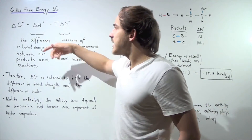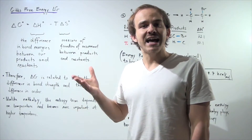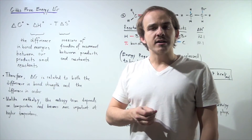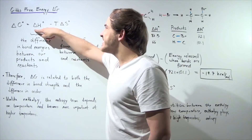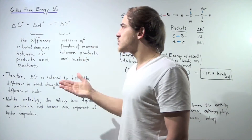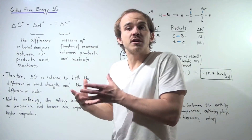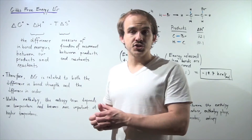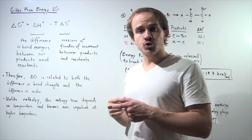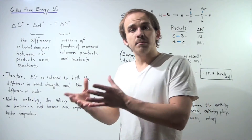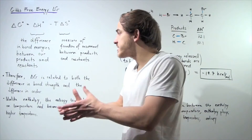This delta H, as we saw in a previous lecture, is simply the difference in the bond energies between the products and the reactants. If this term is negative — if we have an exothermic reaction — that means our products have stronger, more stable bonds than our reactants. If it's positive, the reactants have stronger bonds than our products, and therefore our reactants are more stable.